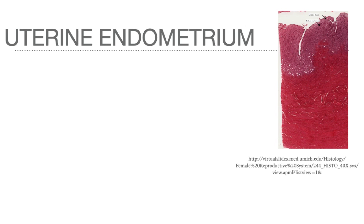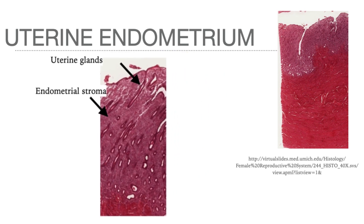Viewing the uterine endometrium at high power magnification, tubular glands called the uterine glands can be seen extending downwards from the epithelium into a very thick layer of connective tissue called the endometrial stroma. The endometrium undergoes monthly cyclic changes in histological appearance in response to changes in the levels of the ovarian hormones.